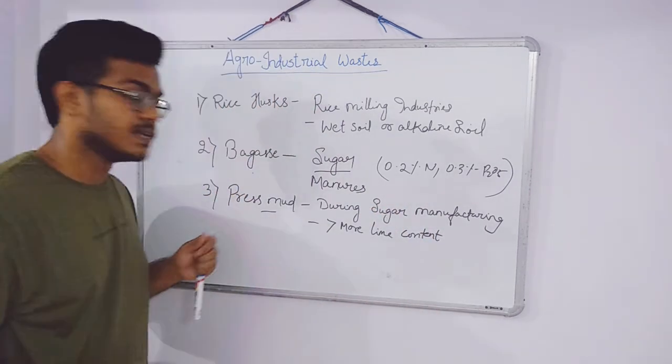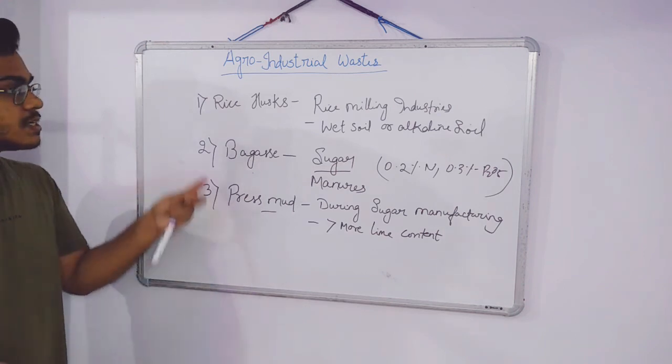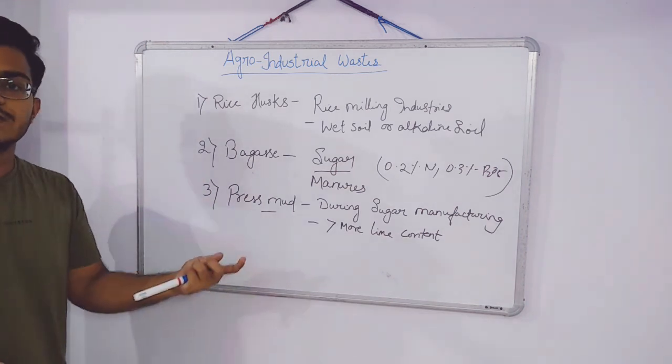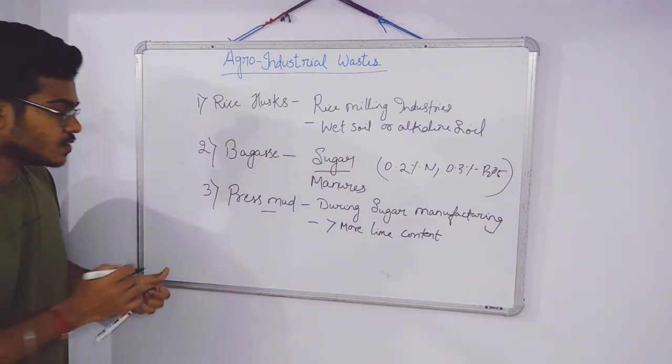These are the main important products or agricultural industrial waste. One more product that we find from agriculture industry is coirpith.